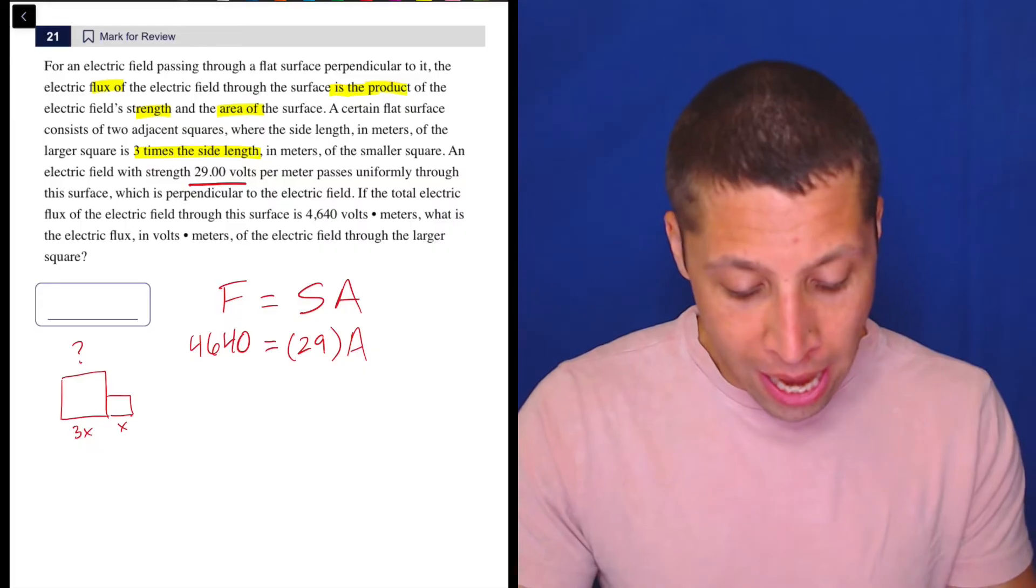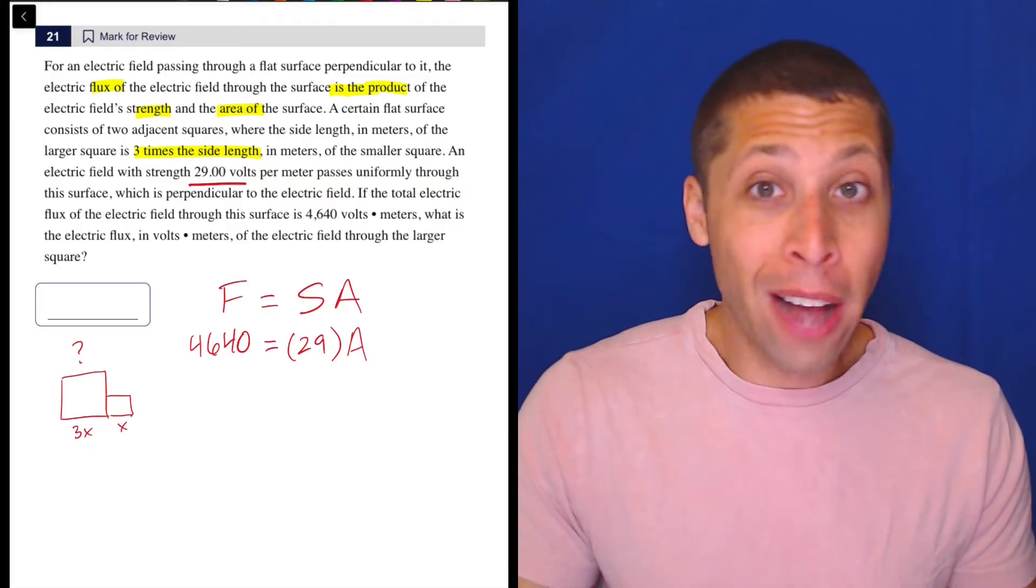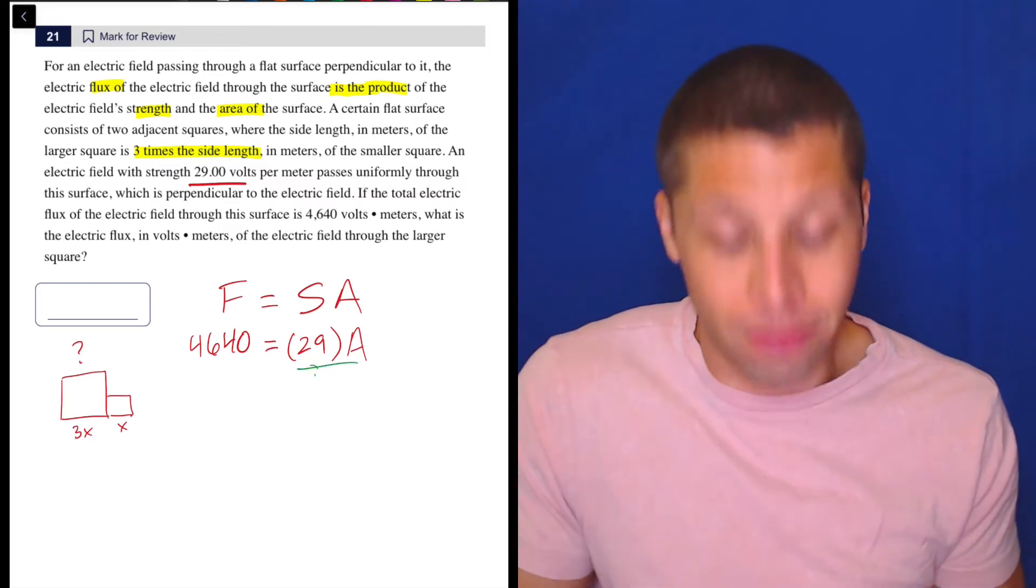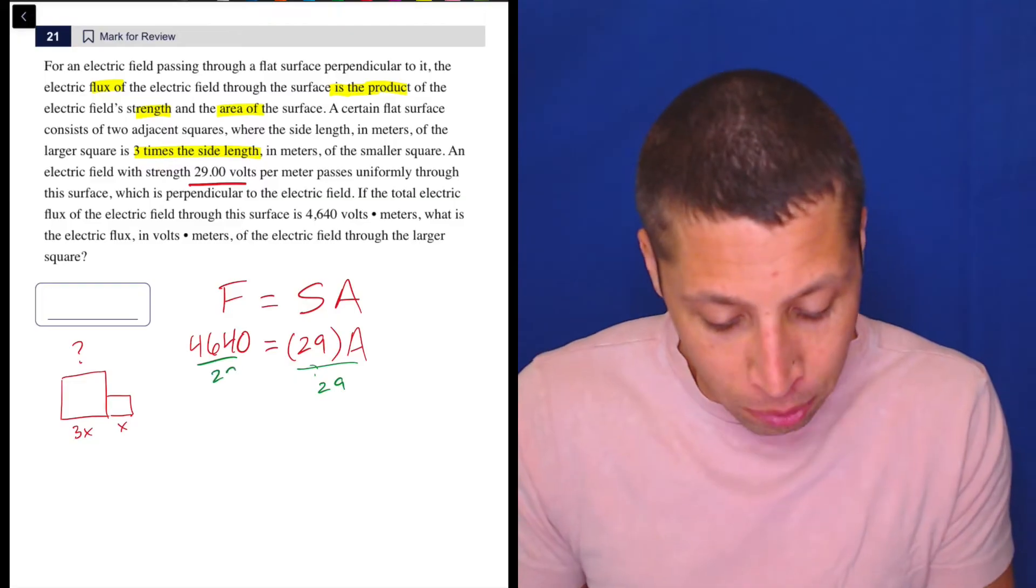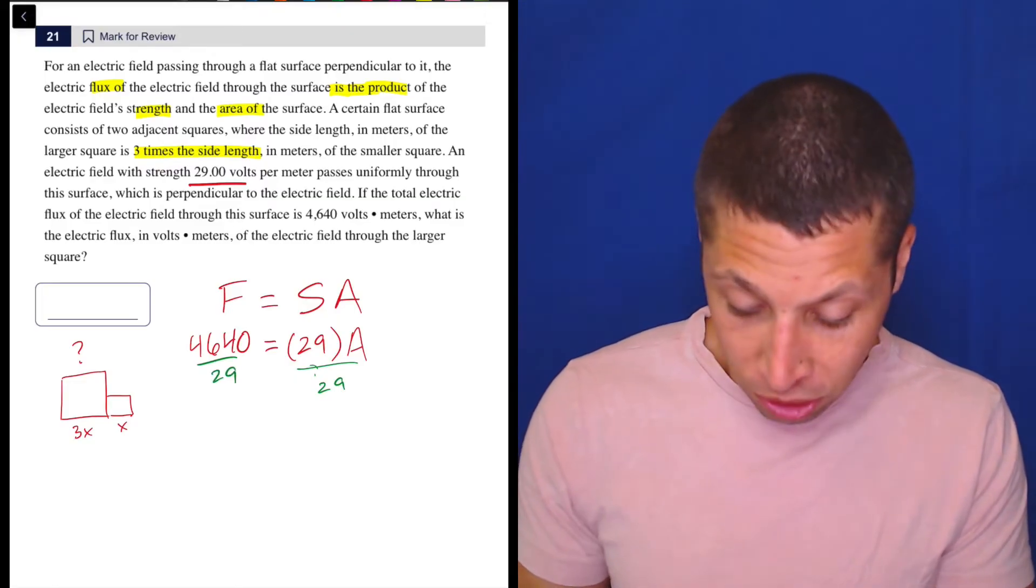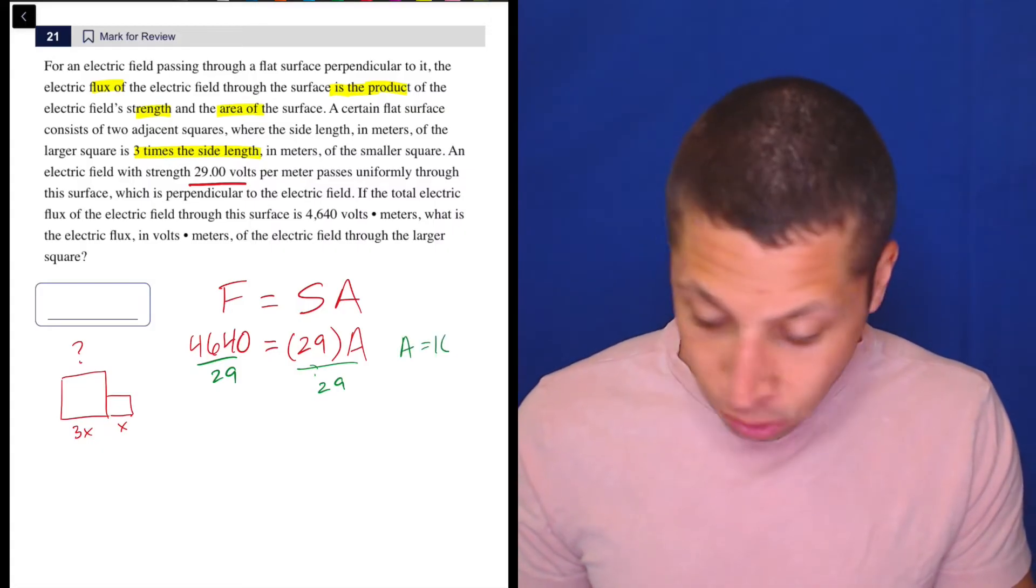What do I have here? I have a formula, an equation with two values, and I could just do basic algebra solve for the third. So let's just divide by 29. Let's see what that gets me. So regular calculator here, 4640 divided by 29. The area is 160.